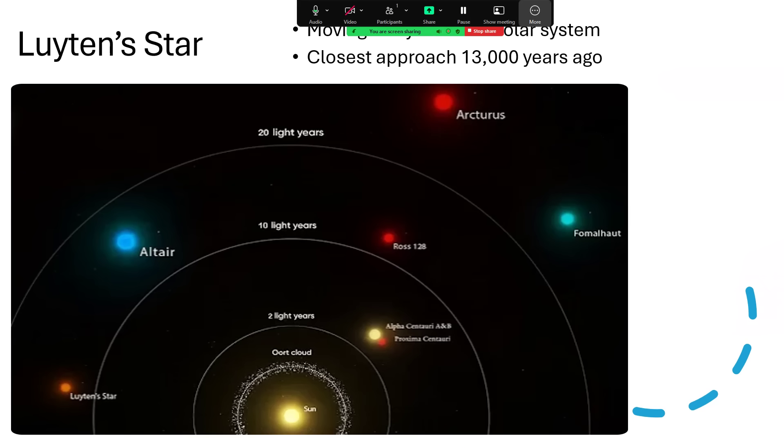Anyway, I said it was about 12 light years away, and here's a little sort of schematic with the sun in the center, the Oort cloud of comets around it, and then out at about four light years, we've got Alpha Centauri, AB, and Proxima, and then other stars. And you can see I've talked about some of these in other videos. In fact, I've talked about all of them, Ross 128, Arcturus, Fomalhaut, and Altair. So here's Luyten's star off to the left-hand side there as the red dot.